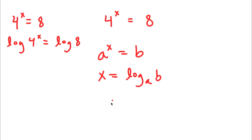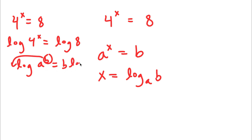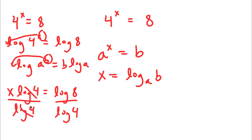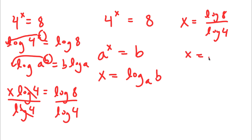Using the rule that log of a to the power of b equals b times log a, I can move x to the front. So this equals x times log 4 is equal to log 8. Now, dividing both sides by log 4, I'll have x is equal to log 8 over log 4, which can be written as log base 4 of 8.